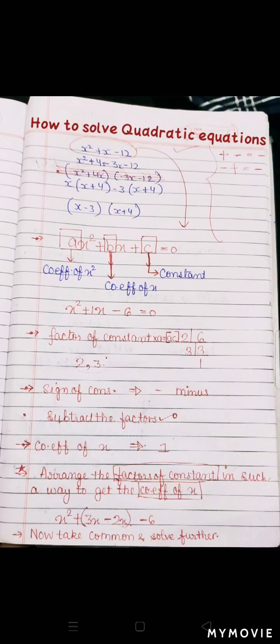Sabse pehle humein yeh pata hona chahiye ki quadratic equations kya hoti hai. Quadratic equation woh hoti hai jinn mein humare variable ki highest power square honi chahiye — it should be 2. Aur iska jo base hota hai, kis taraf se equation hoti hai, you can see it is always in the form of ax² plus bx plus c. Aap dekh sakte hain is tarah se aapki equation bani hoti hai: ax² plus bx plus c, aur inko hum equal to zero maante hain.